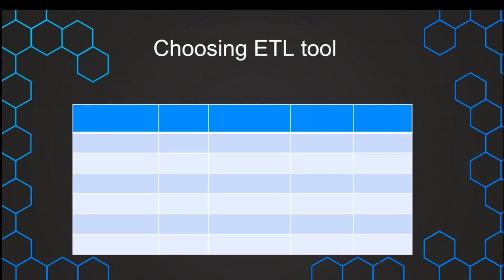Once we have evaluated our situation, we can focus on evaluating the tools and create a list or matrix. We look at all of the tools and evaluate different categories — this is not an exhaustive list, but important factors include cost and budget, what are the must-have connectors, and the range of connectors in different ETL tools. There may also be additional capabilities that are must-haves. One important factor is also how easy it is to work with the tool, since we will spend a lot of time with it, and we have to consider how technically experienced the users are.